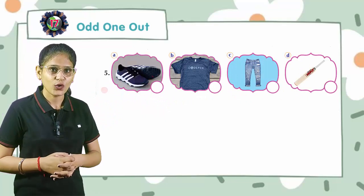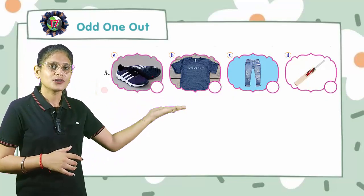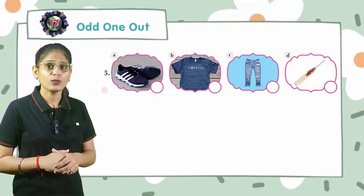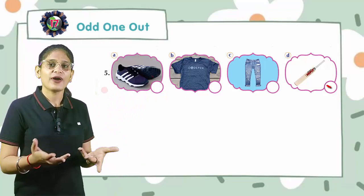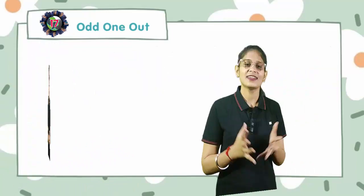Now come to the fifth. Here we have some clothes. Here shoes, t-shirt, jeans and then we have bed. That is completely different from these things. So you have to cross out bed. Thank you students.